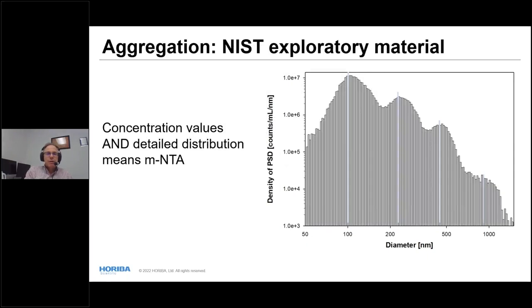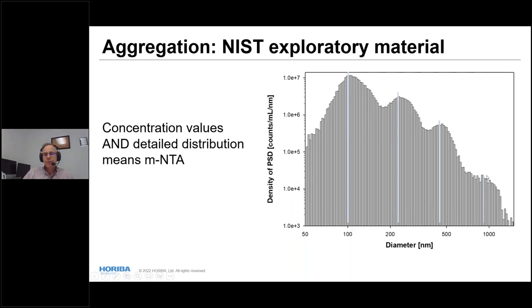For protein aggregation, this is a simulated material made up at NIST as an exploratory test material — a mixture of four different broad distributions sent out as test materials. We were able to recover all four broad peaks. This was a longer measurement because of the huge variation in concentration: very few large particles (note the log scale) compared to many small ones. We retrieved detailed distribution and concentration values, with everyone quite pleased with the result.